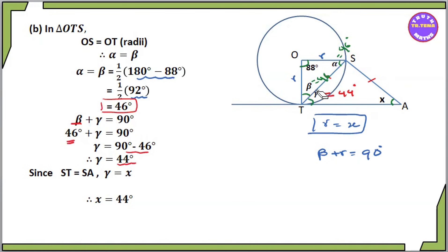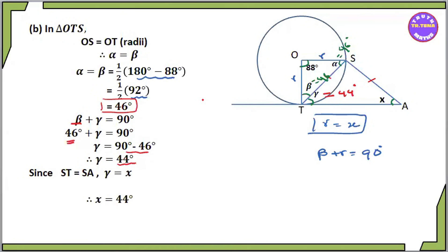So gamma equals x. So now we have triangle ST. If you liked this video, please share, comment, and subscribe.